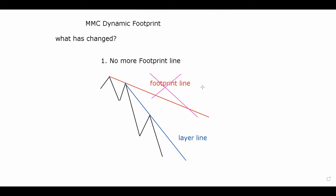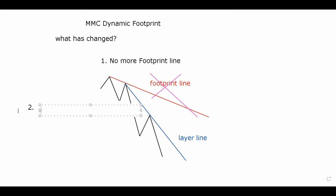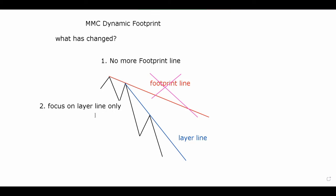An important thing you need to know: not every market condition is called a layer line. There are criteria we have to mark out to call it a layer line. It does not mean when the market has dropped you draw a line anyhow - there are rules. The layer line must have higher highs and lower lows, or lower lows and lower highs. That complete downtrend or uptrend is what marks up to be called a layer line.